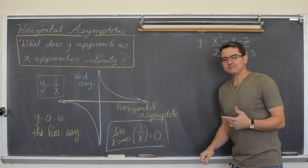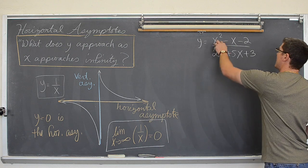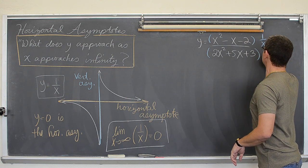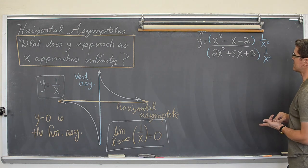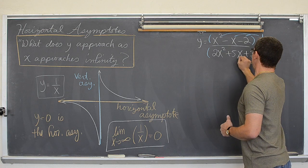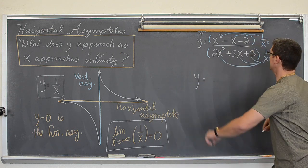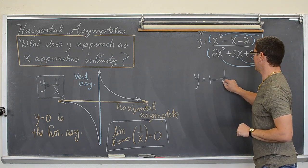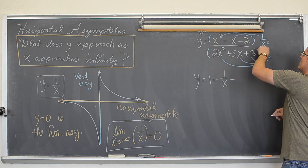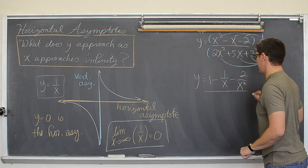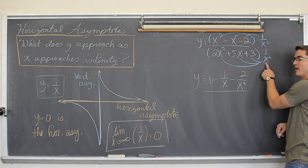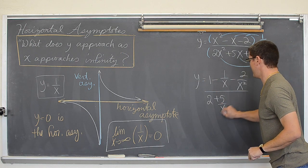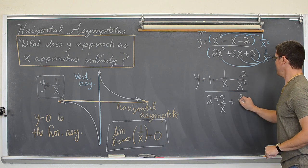Let's take a look at the example of y equals x squared minus x minus 2 over 2x squared plus 5x plus 3. The top has a degree of 2 and the bottom has a degree of 2, so I am going to multiply top and bottom by 1 over x squared to algebraically show the work of finding the horizontal asymptote. Distributing through and simplifying as I go: y equals x squared over x squared, which is 1, minus x over x squared, which is 1 over x, minus 2 over x squared.